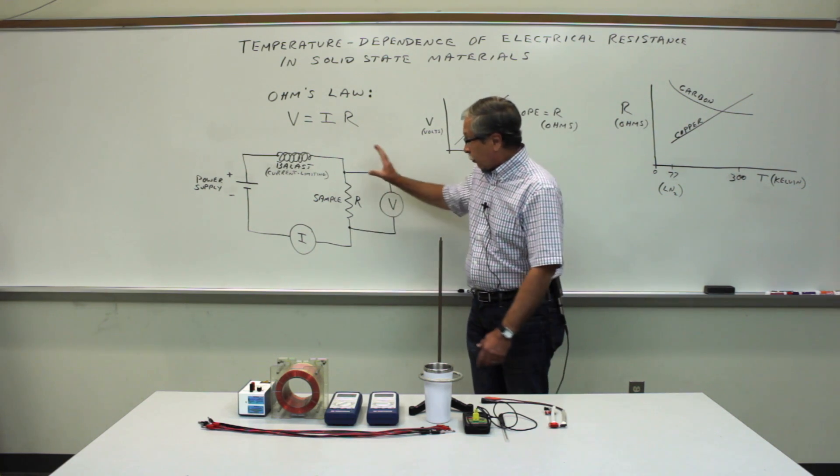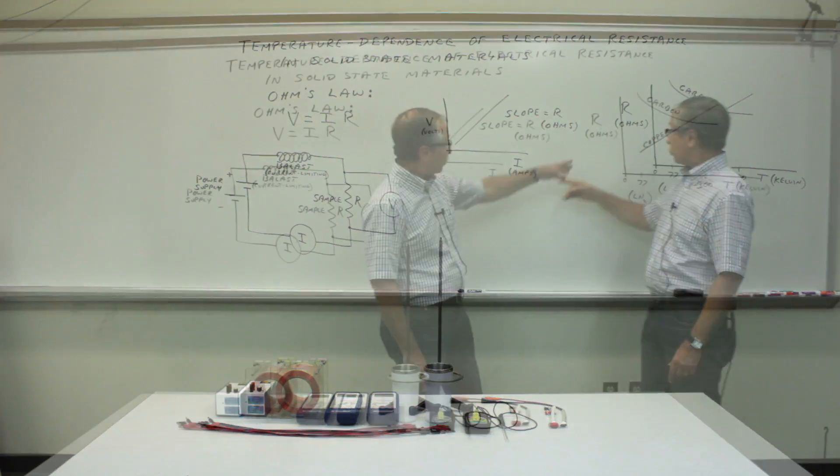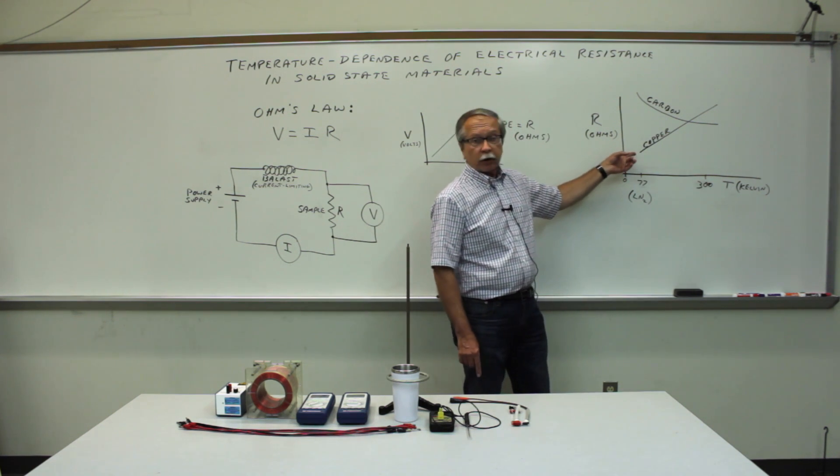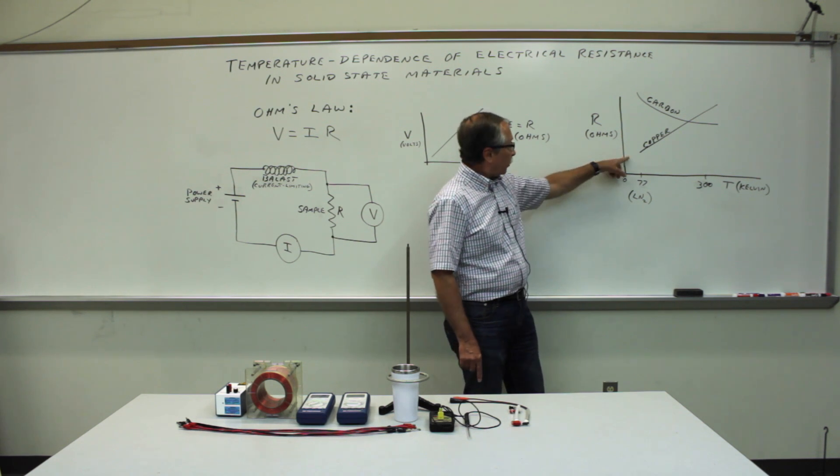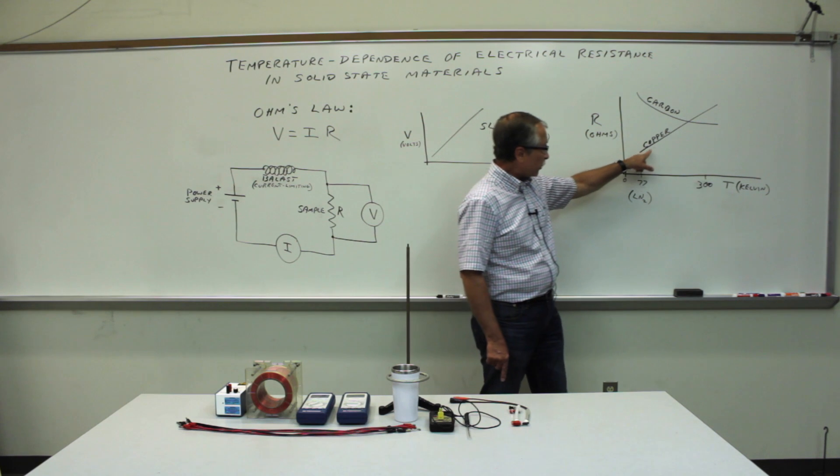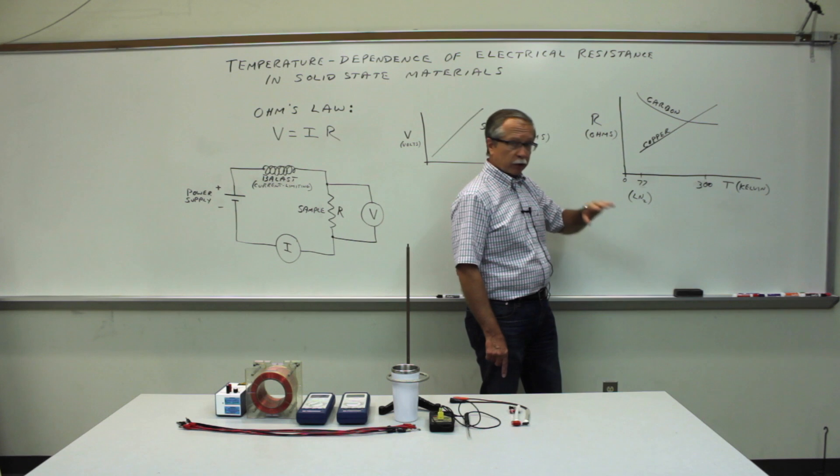After having measured the resistance at various temperatures, plot the resistance as a function of the temperature, and depending on the type of material, you'll see very different behaviors. The resistance of a metal, like copper, will increase roughly linearly as a function of temperature over the range of interest.